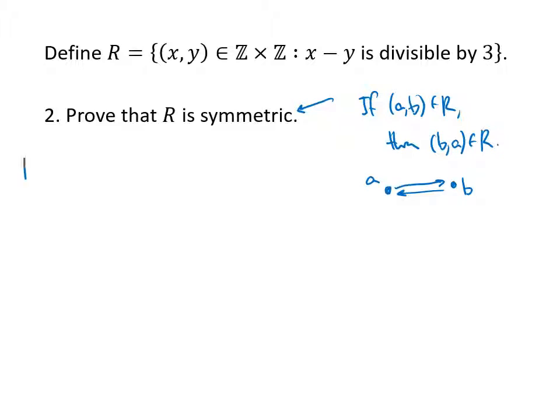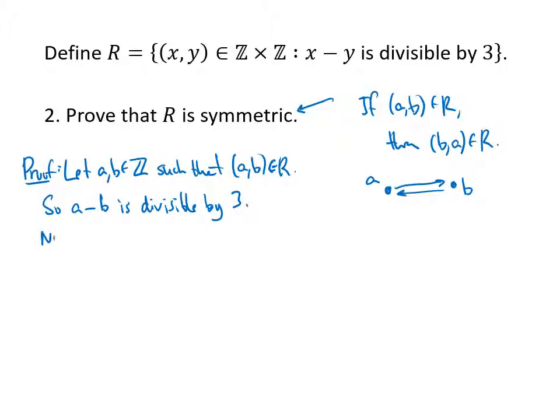So since this is an if-then, that's how our proof is going to start. We're going to start with our hypothesis. We're going to say let a and b be integers such that (a,b) is in my relation R. What does it mean for (a,b) to be in my relation R? Well, it means that a minus b is divisible by 3. That's how this relation is defined. That means that a minus b is 3k for some integer k.